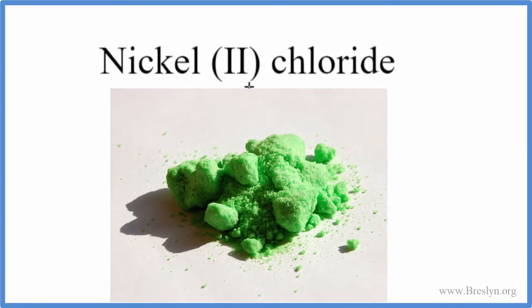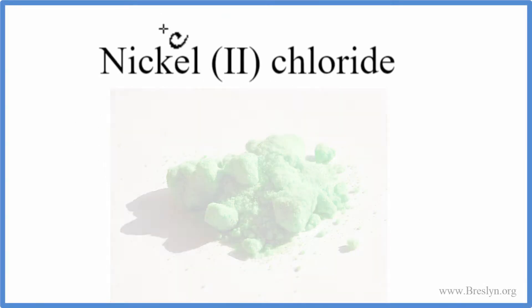To write the formula for nickel(II) chloride, we look on the periodic table and find nickel has an element symbol of Ni. And then chloride, we're looking for chlorine, and that's Cl.